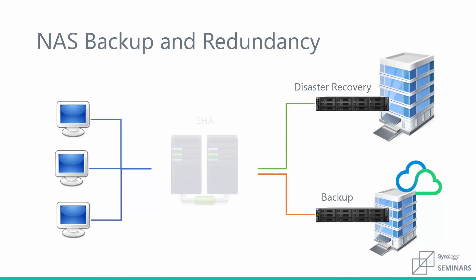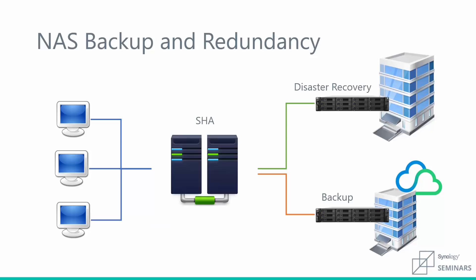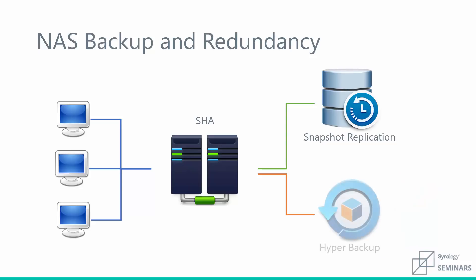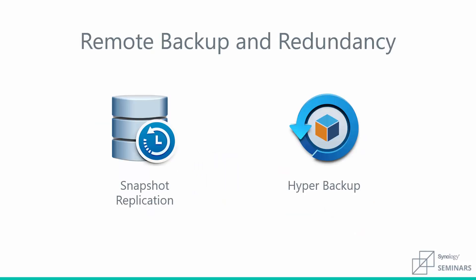That's been a look at how we handle local redundancy with a high availability cluster. Now let's talk about backing your data up off-site. For disaster recovery you'll be using snapshot replication, and for backup you'll be using Hyper Backup. Let's dig into these two pieces of software and their key differences and when it's appropriate to use each of them.